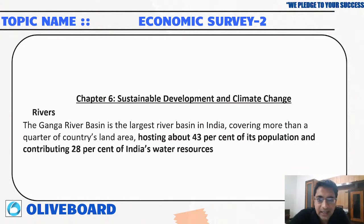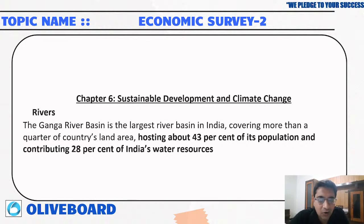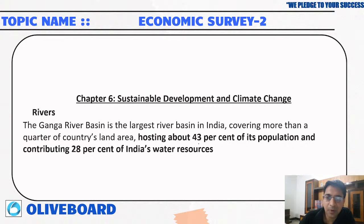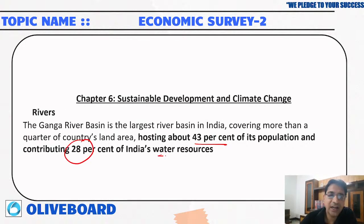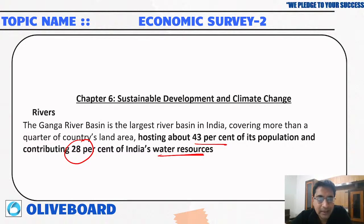The Ganga river basin is the largest river basin in our country, covering more than a quarter of the country's land, hosting around 43 percent of the population, and contributing 28 percent of India's water resources. The Ganga river basin includes the Ganga river along with all its tributaries.